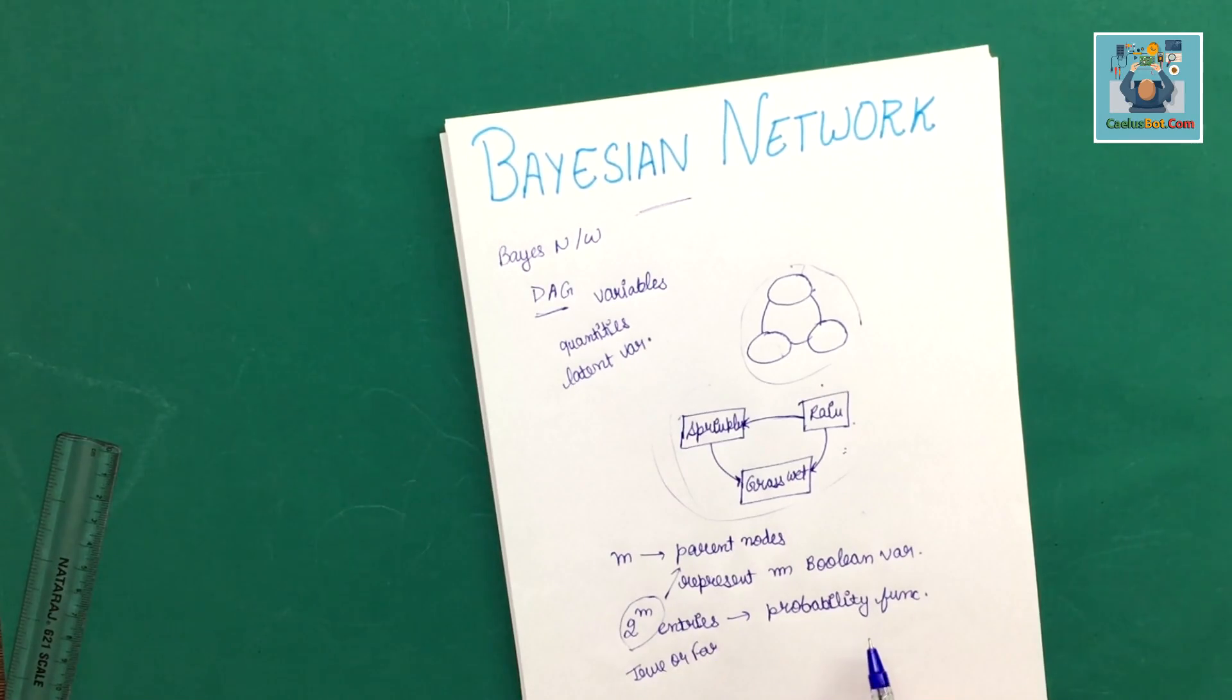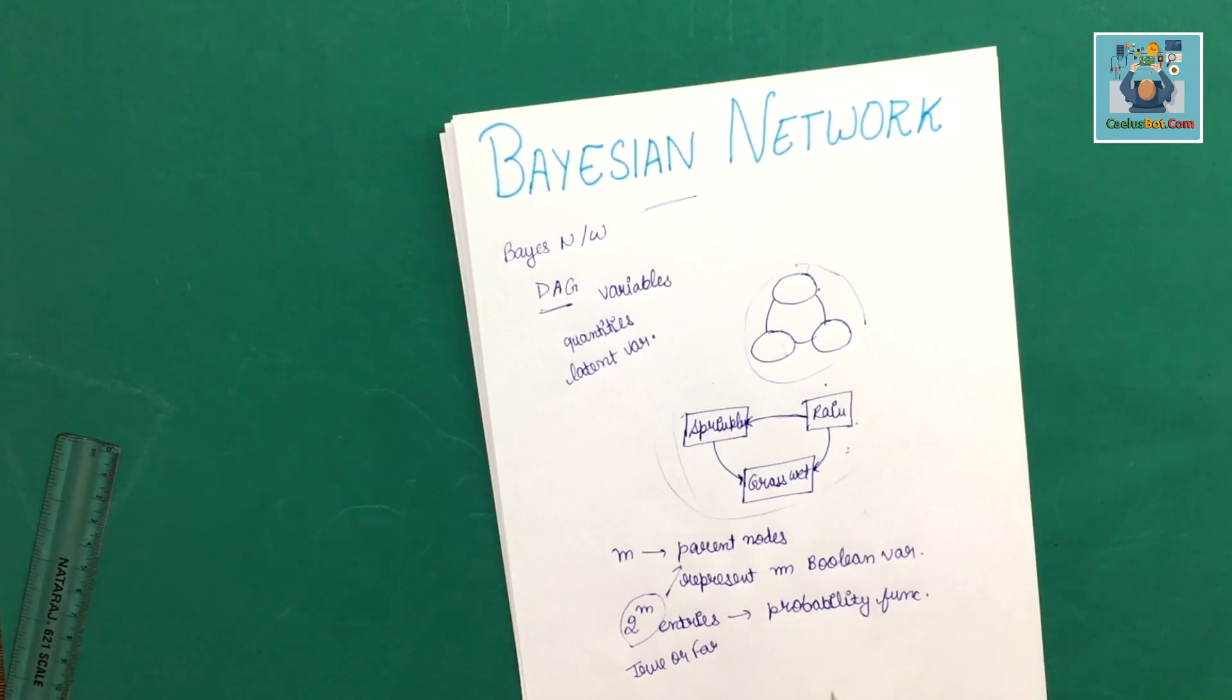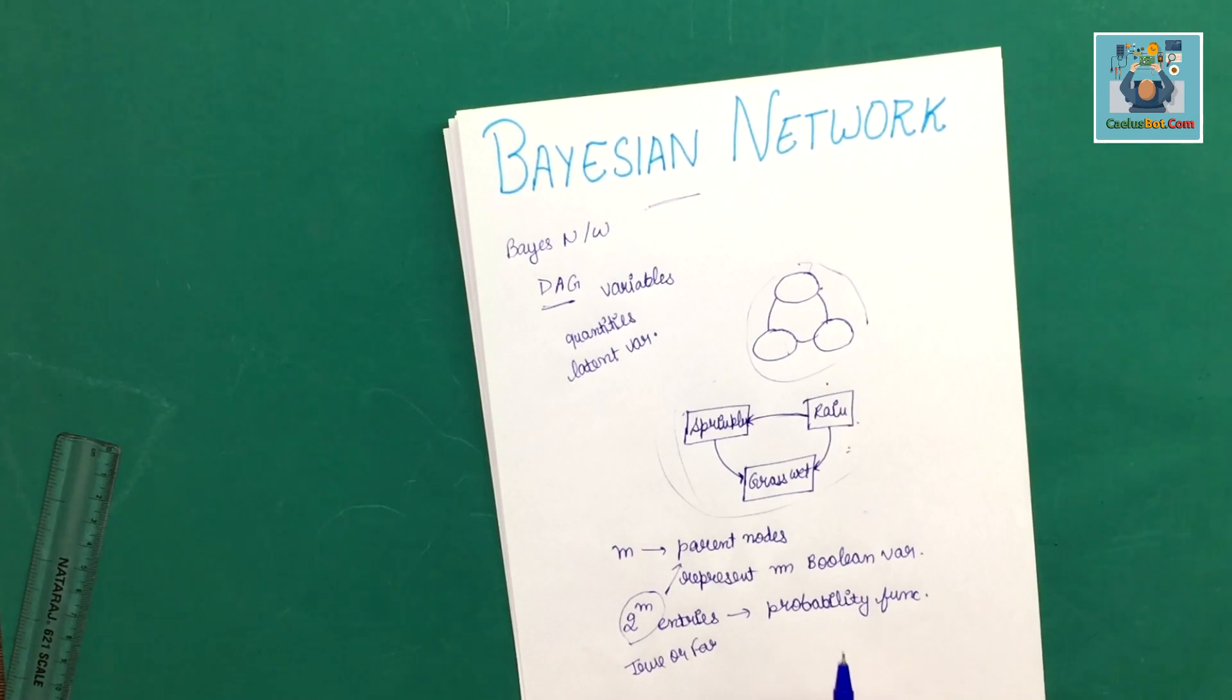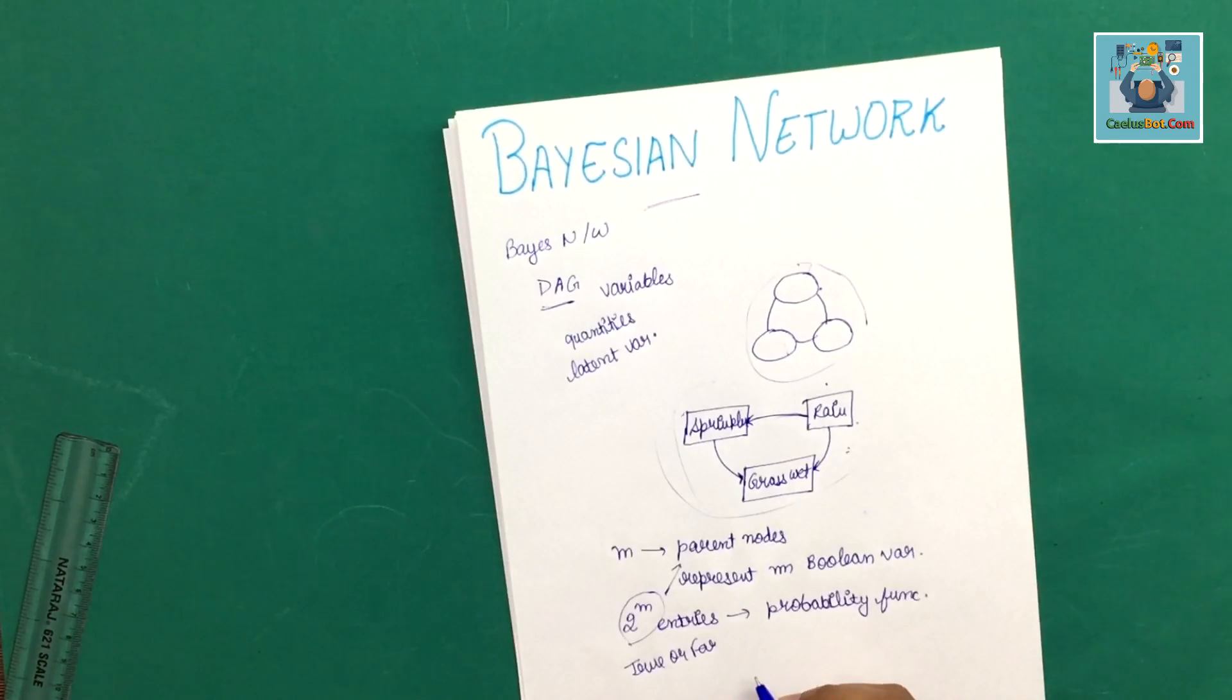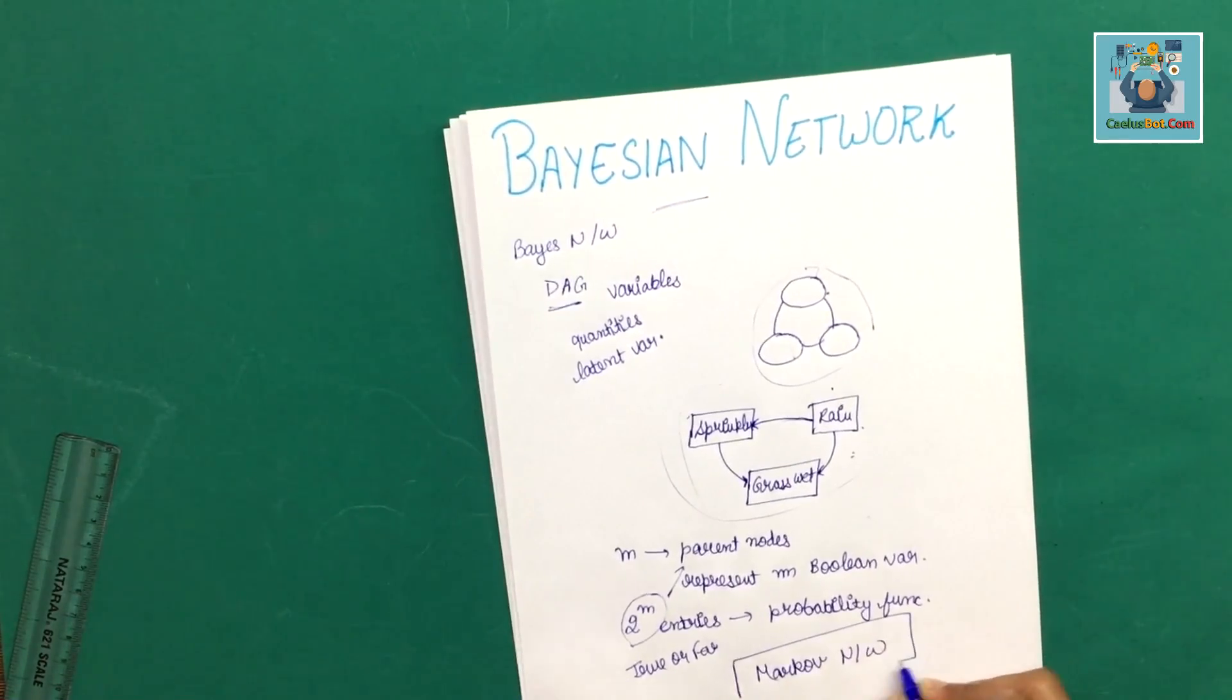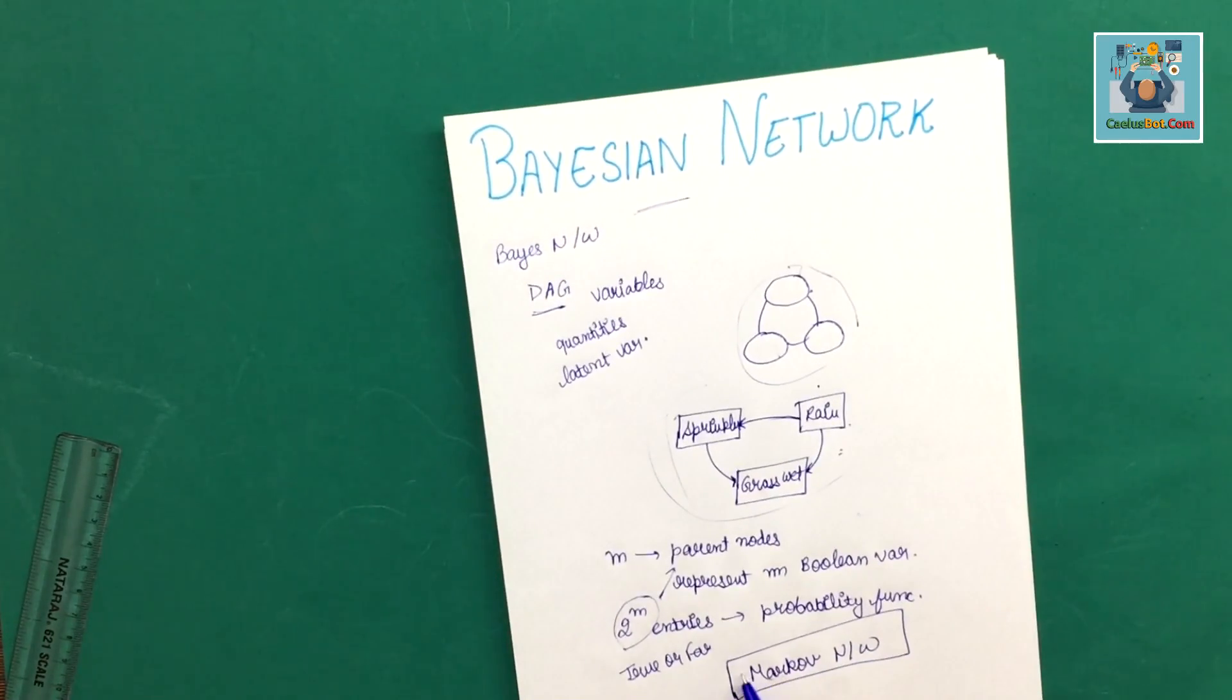Similarly, this idea applies to undirected and possibly cyclic graphs. If we have an undirected and cyclic graph, this is not our cyclic graph. If we have a cyclic graph, we use another method called Markov Network, which is cyclic and undirected.